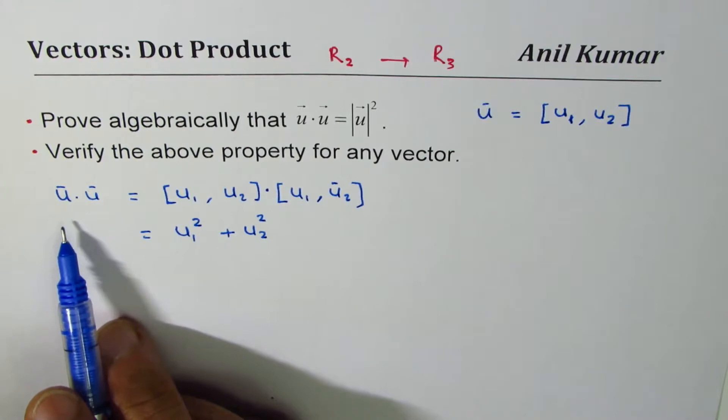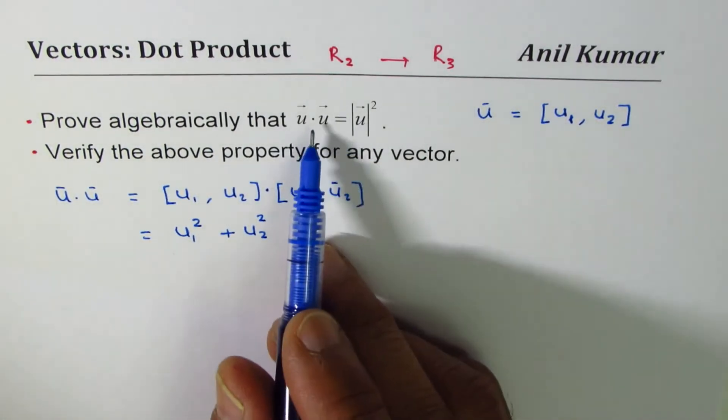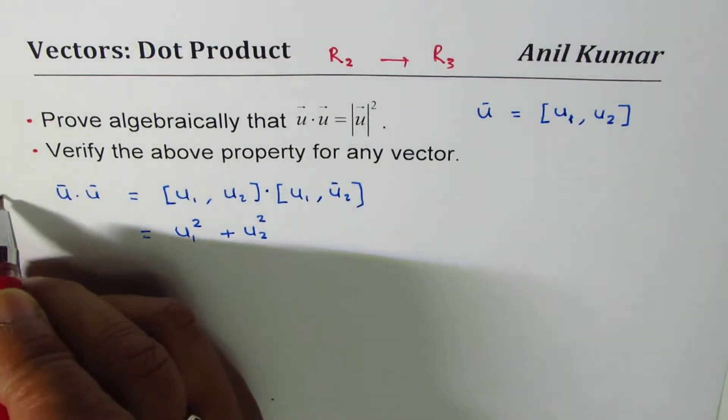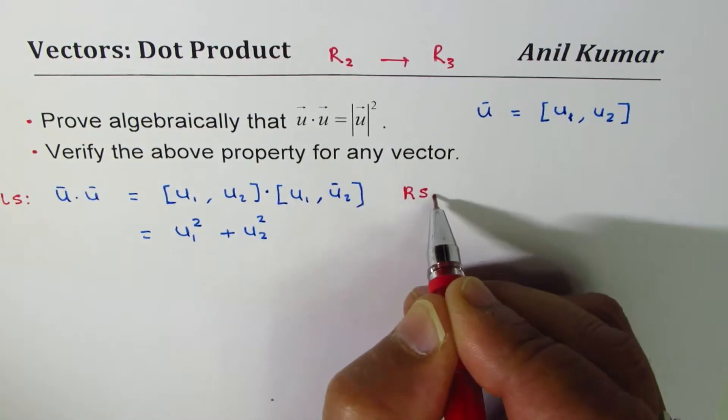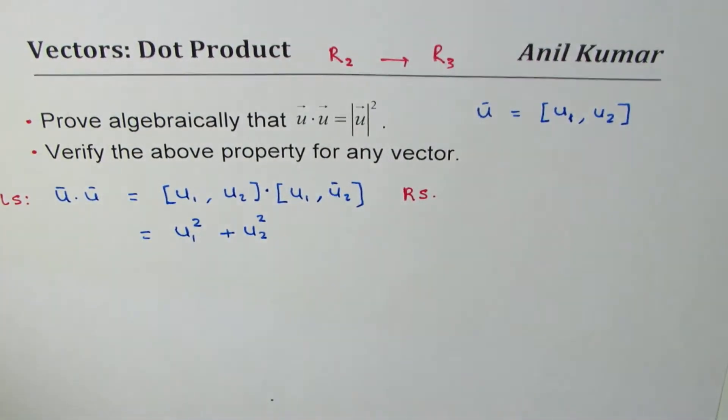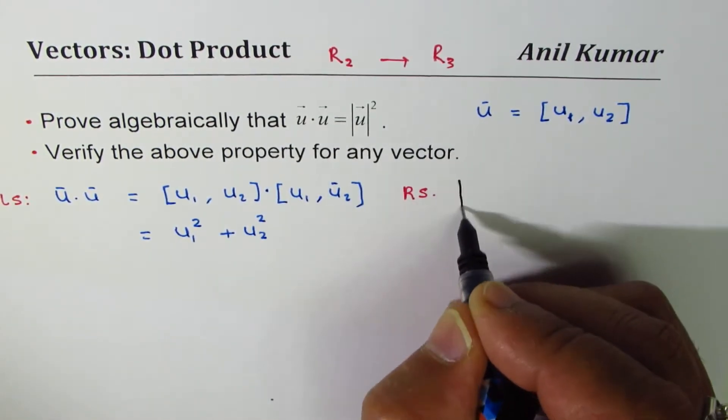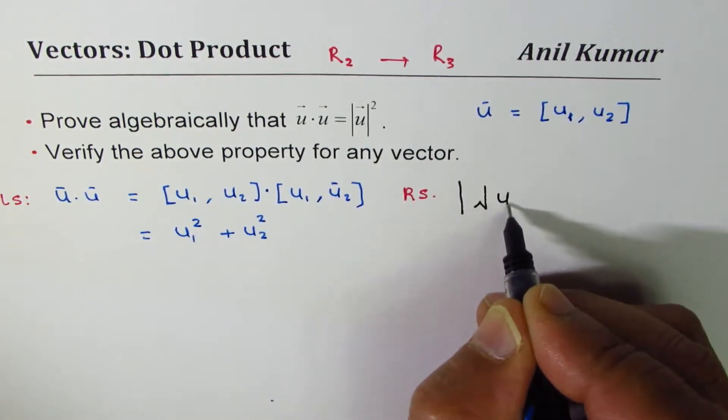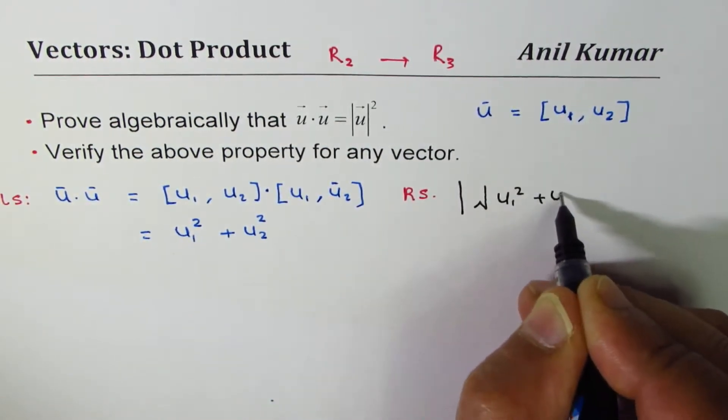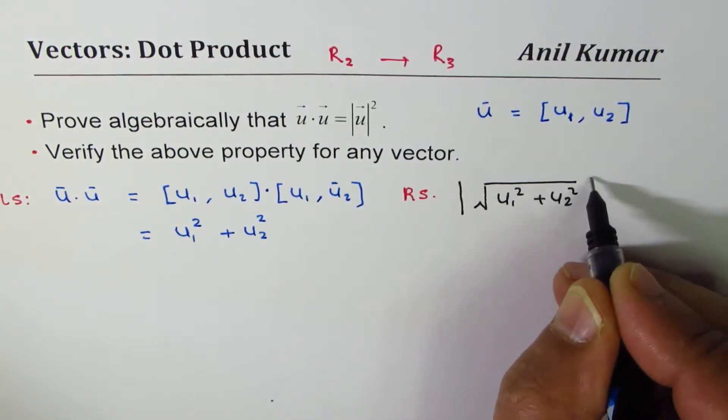That is the left side for us. On the right side, let me calculate what is square of the magnitude. The magnitude is square root of u1 squared plus u2 squared. That's the magnitude, and if I square it, what do I get?